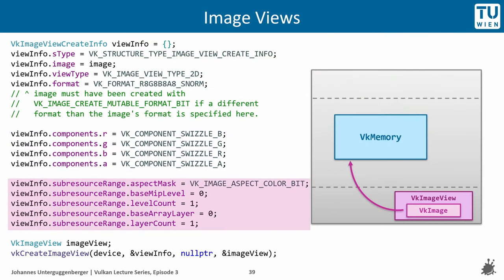Further parameters include the specification of a sub-resource range, meaning the image view could refer to only a part of the image or to only one layer of an image if it contains multiple layers. The VkImageView handle is finally created with the vkCreateImageView function, and in most places you will find yourself passing around VkImageView handles rather than VkImage handles directly.